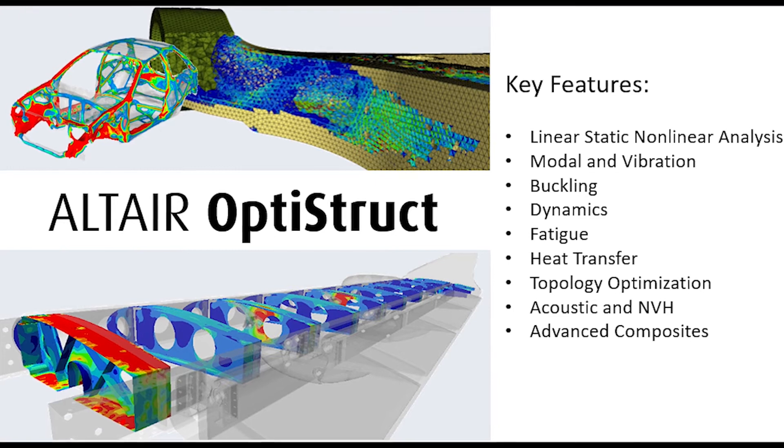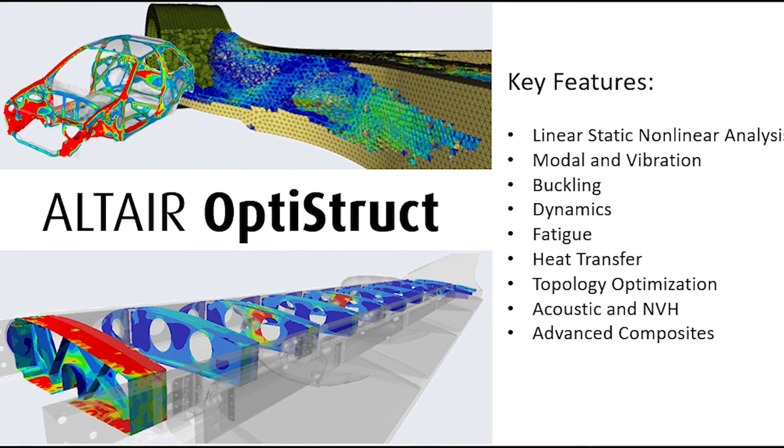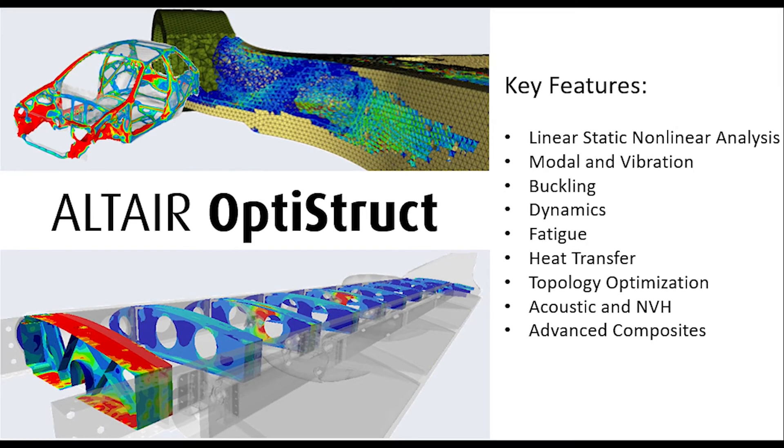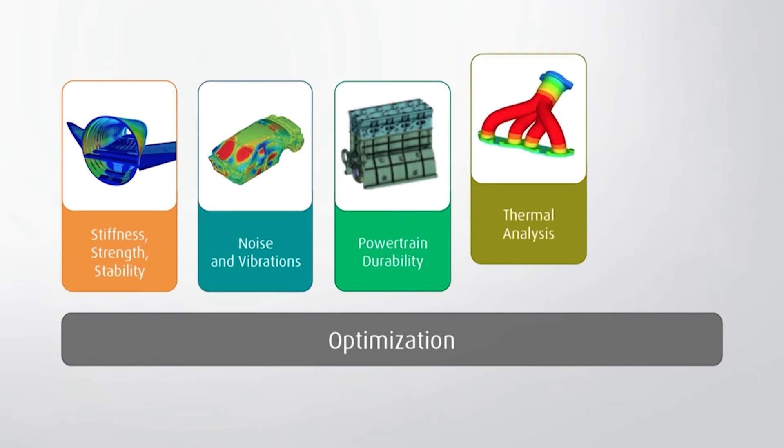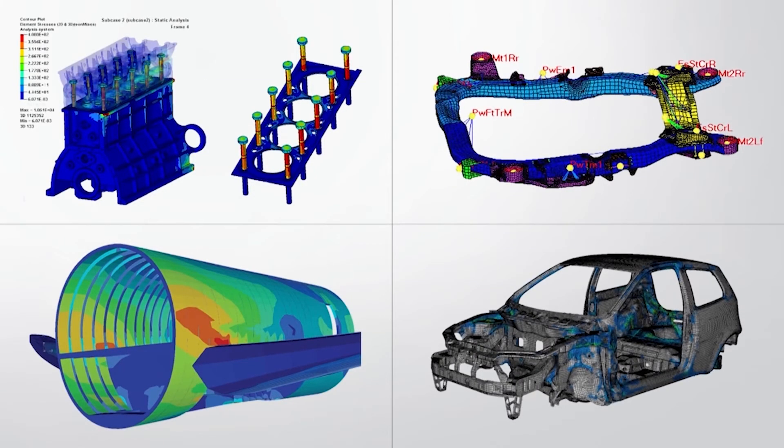Altair OptiStruct is an incredibly powerful solver for implicit and explicit testing as well as topology optimization. Solvers for linear and non-linear variations, acoustic, fatigue, heat transfer, and multi-physics analysis, and is scalable on CPU and GPUs. The optimization technology inside OptiStruct is extremely powerful and includes the ability to run optimization for many applications like multi-material and multi-model.